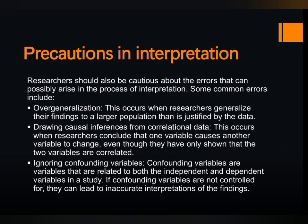The first precaution is overgeneralization. This occurs when researchers generalize their findings to a larger population than is justified by the data. We draw a sample from the population and perform all experiments on that sample. If the researcher overgeneralizes their findings to a larger population, it may lead to errors.